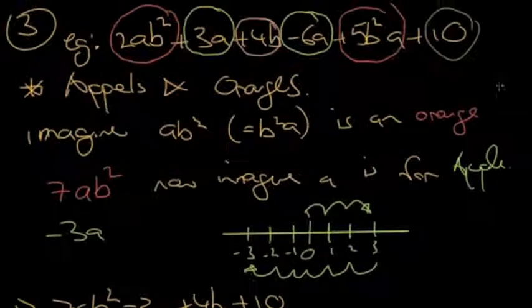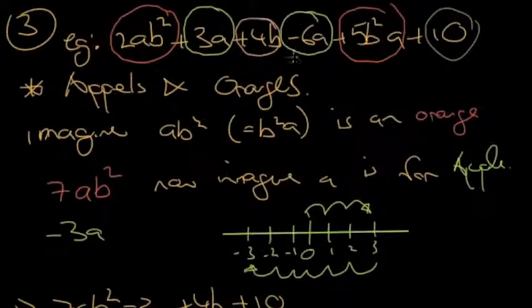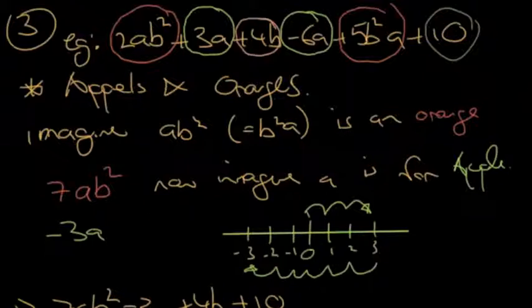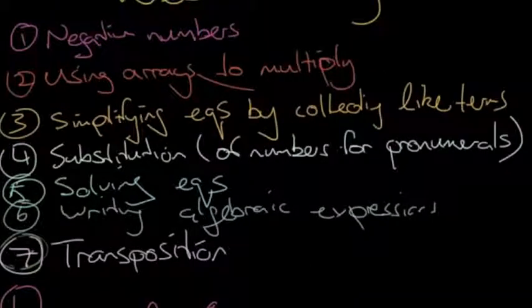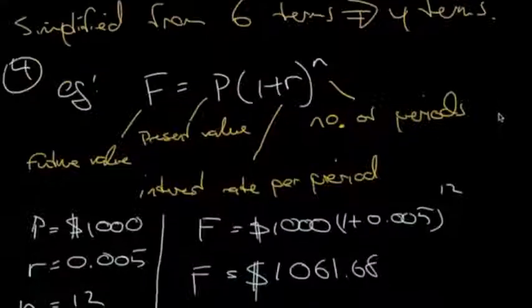And again, looking at apples and oranges. And we noticed that the B and the A, the order, didn't matter. Because with multiplication, the order does not matter. But we could only compare like things. Apples with apples and oranges with oranges.